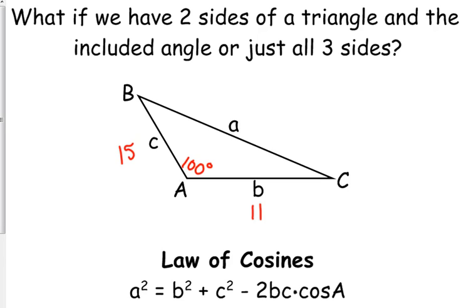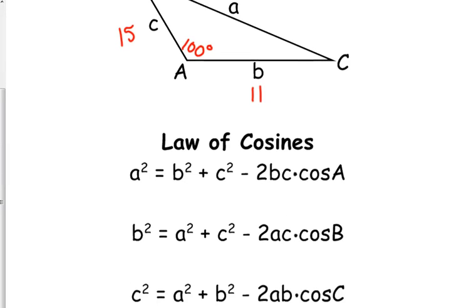So depending on what information we're given, just like with the law of sines, there were different versions. Technically, there are three versions of the law of cosines. Now, there's nothing different about them except the order of the variables. The only thing different is the order of the variables. So you'll notice it always starts with the Pythagorean theorem, and then you do minus two times whatever two sides were on the right side of the equation times the cosine of the angle that was on the left side of the equation. So A squared equals B squared plus C squared minus 2BC cosine of A. If you put B squared on the left side, then it would be B squared equals A squared plus C squared minus 2AC cosine of B.